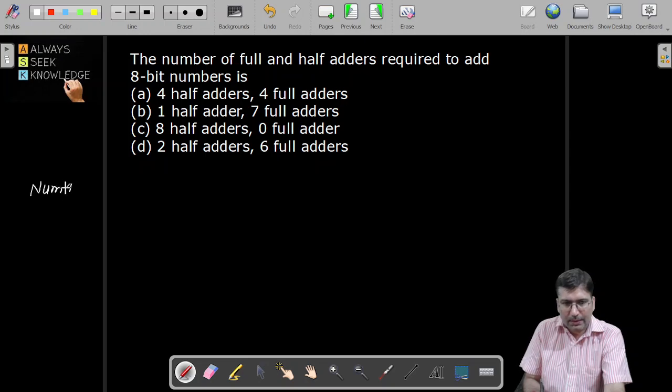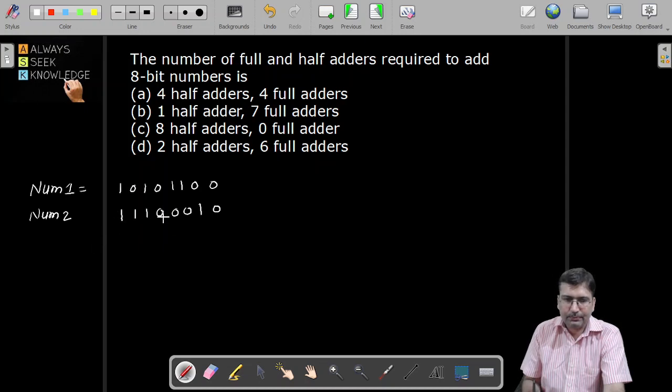Let's assume there is num1 and num2. So num1 is having some 8 bits - the combination can be anything, one zero one zero, one one zero zero. Num2 is also having, let's say, one one one zero zero zero one zero. So both are 8-bit numbers.